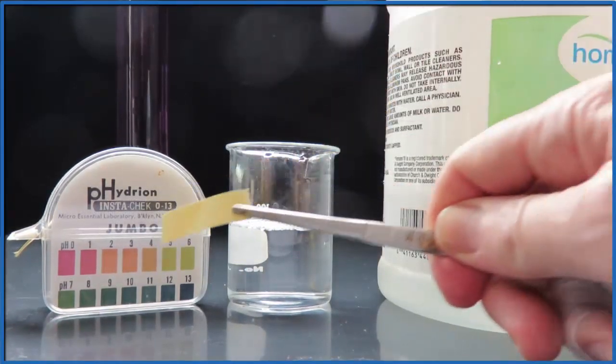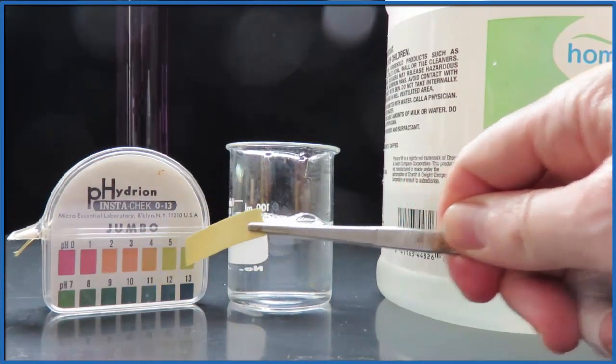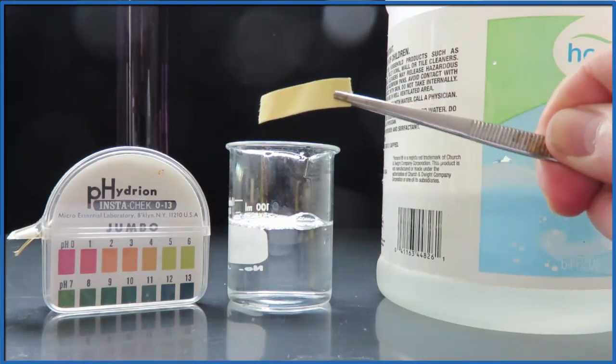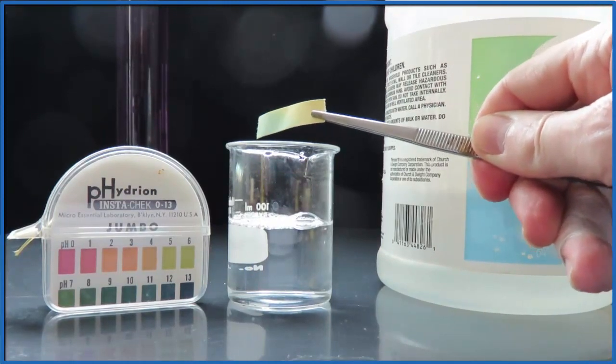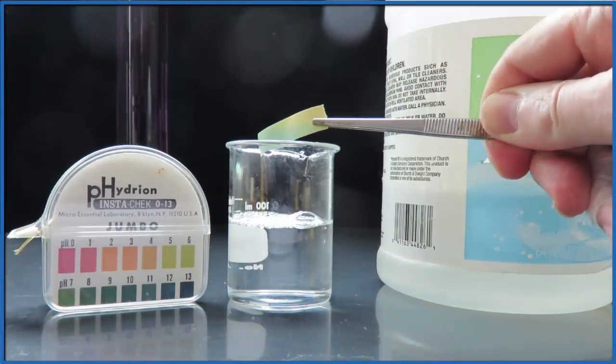We can even see this a little bit better by taking a piece of pH paper and holding it over the beaker where that ammonia gas is coming up, and the pH paper starts turning green immediately. So it's changing in response to that ammonia gas.